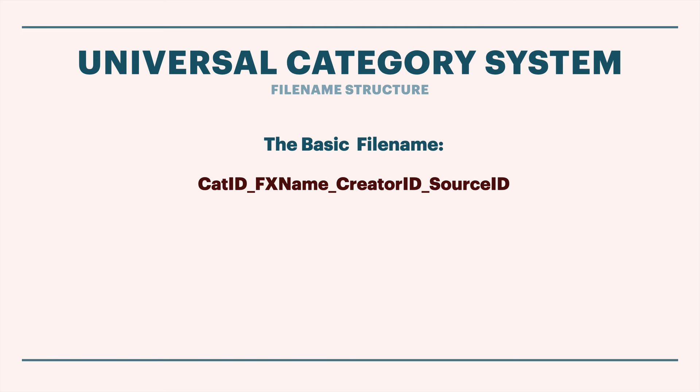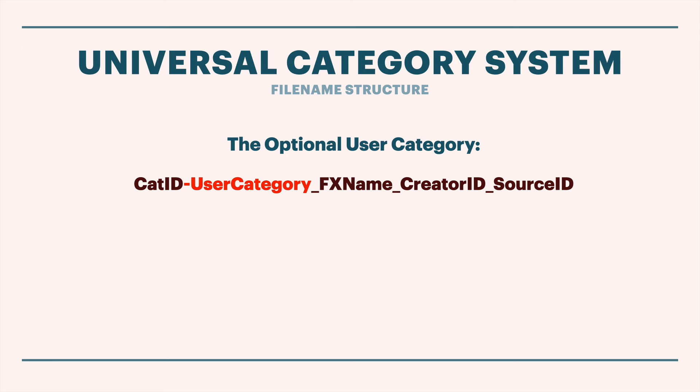Looking at the basic file name structure - cat ID, effects name, creator ID, and source ID - if we want to designate a user category, it's done by adding a dash and then a term directly after the cat ID but before the first underscore. So it's a tail extension of the cat ID itself. For example: ambience public dash INT for interior, or dash EXT for exterior - whatever additional category a user wants to assign beyond the category and subcategory of our system. Some of the tools will prompt you for this information, and some may be developed to have a drop-down list. By leaving it out, you've chosen not to define user category.